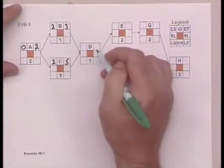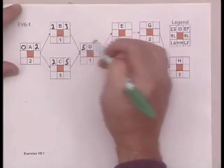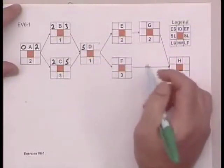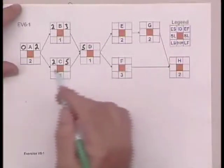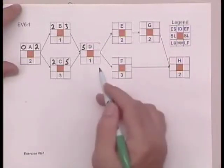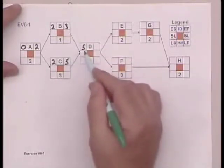D can't start until both B and C are completed, so we choose five, because that's when C is completed. Now, when you're going forward, one thing to keep in mind is always add and always choose the upper value. Here we have a choice between three or five. We choose the upper value, or the highest value, that's five.